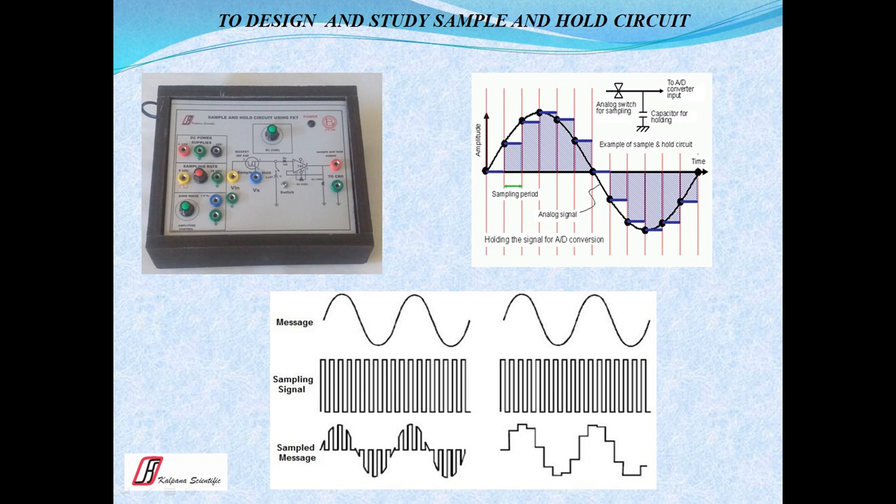In order to use the analog signal with a digital system, we must convert the analog signal to its corresponding digital one. For this conversion we first quantize or sample the analog signal, then to convert the sampled values into digital form we have to hold the value for some time — exactly for this reason we use this sample and hold circuit. By sampling we mean measuring the instantaneous value of the analog signal at some intervals, and to find the appropriate sampling interval we may apply the sampling theorem. That is the brief theoretical description of the sample and hold circuit for this experiment. Now let's move to the experimental part.